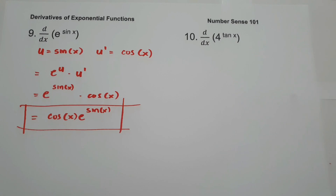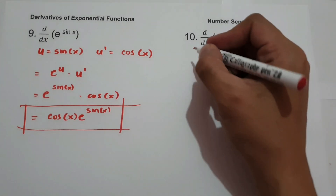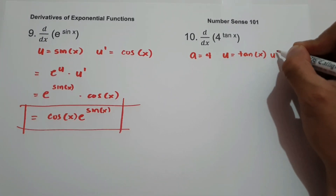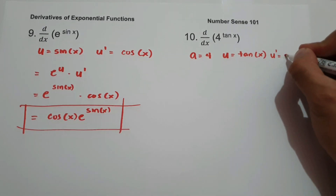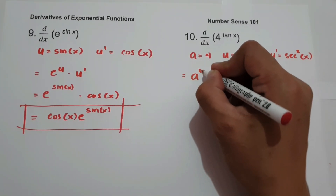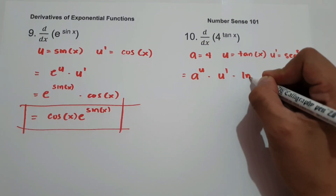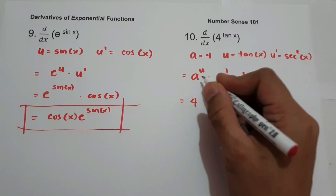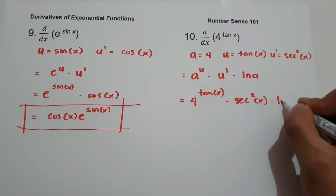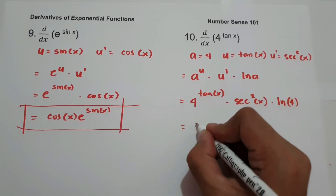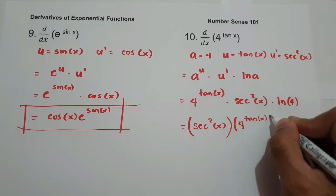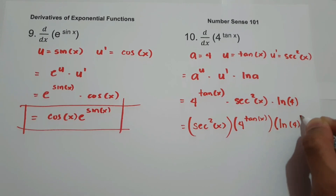On number 10, what is the derivative of 4 raised to tangent x? Let a equal 4, u equal tangent x, and u prime equal the derivative of tangent x, which is secant squared x. Applying the formula, we write the answer as secant squared x times 4 raised to tangent x multiplied by ln 4. This will be our answer.